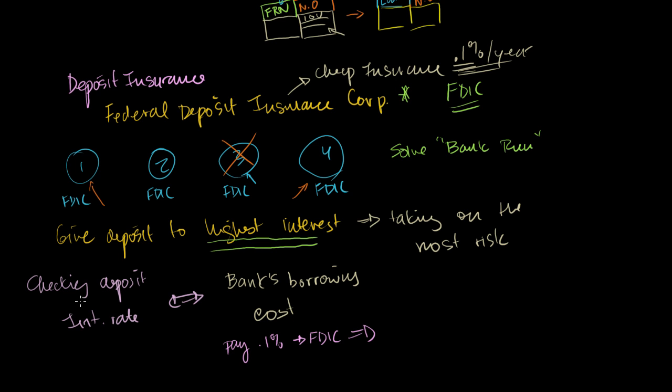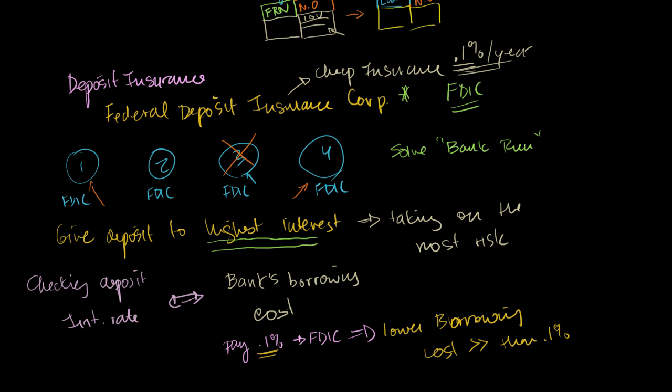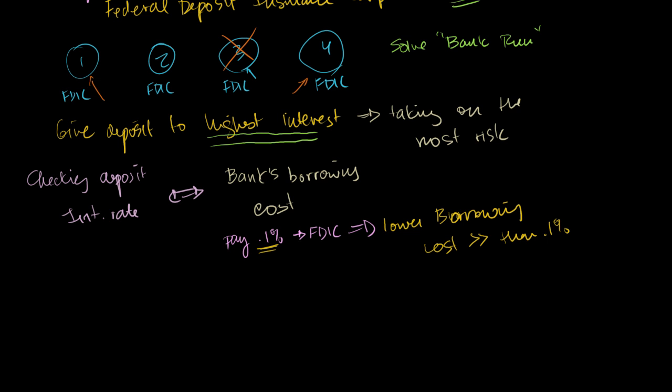Because the depositors are going to say, oh, this is a lot safer than what I thought. So it's going to lower borrowing costs by much more than 0.1%. So it's a really good deal for the banks, and it's an especially good deal for the ultra-risky banks, who might have to pay a little bit more, but because they can now do super-duper risky things. And you say, hey, but this is insurance. The Federal Deposit Insurance Corporation isn't stupid. It should just charge more for riskier banks.